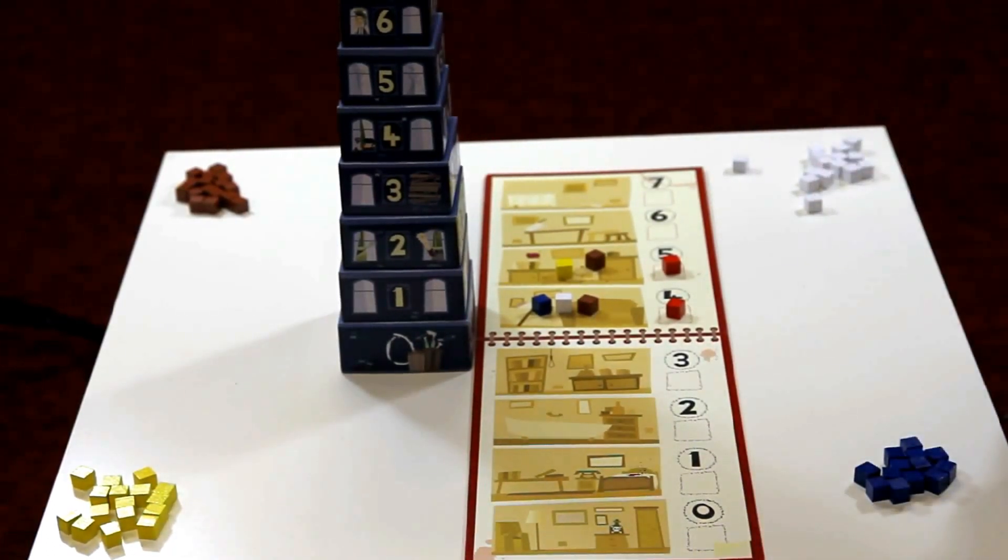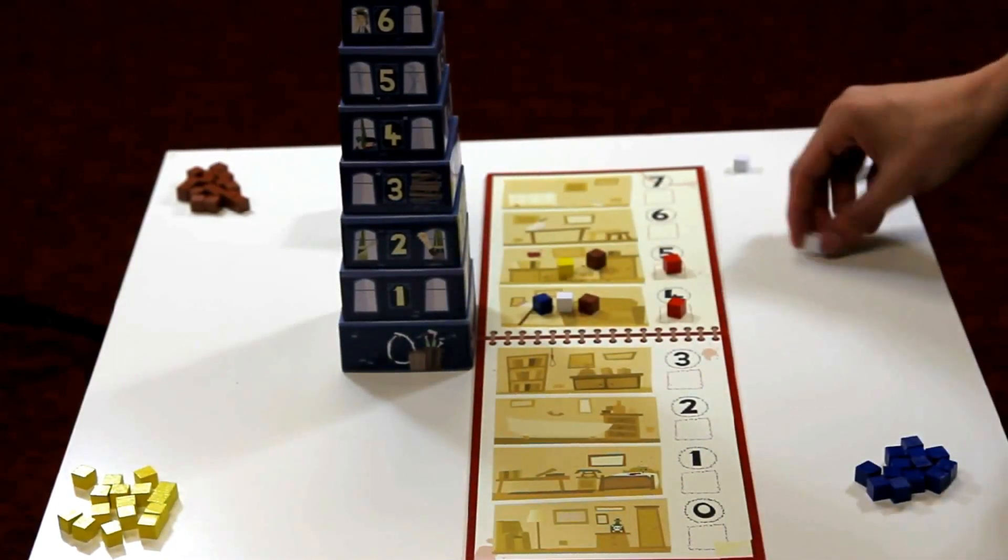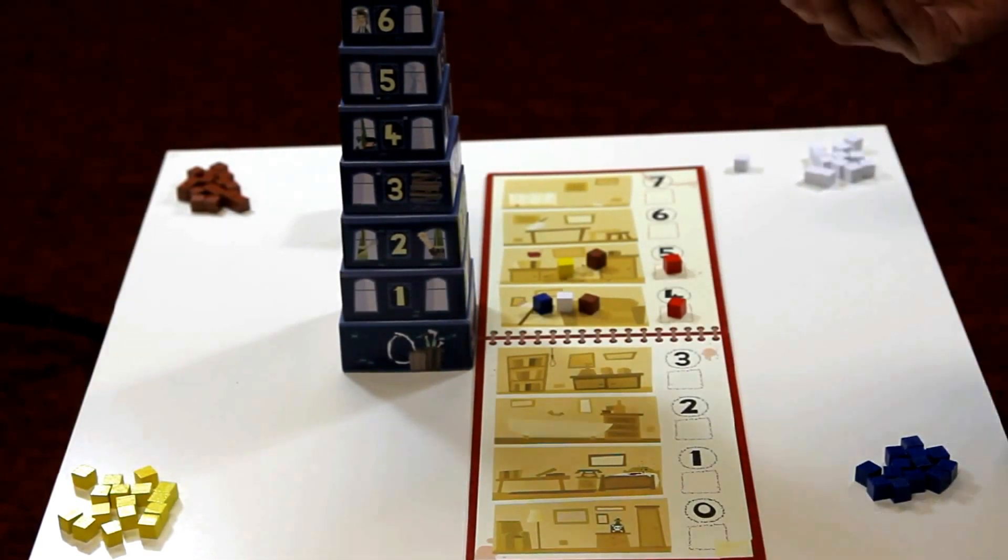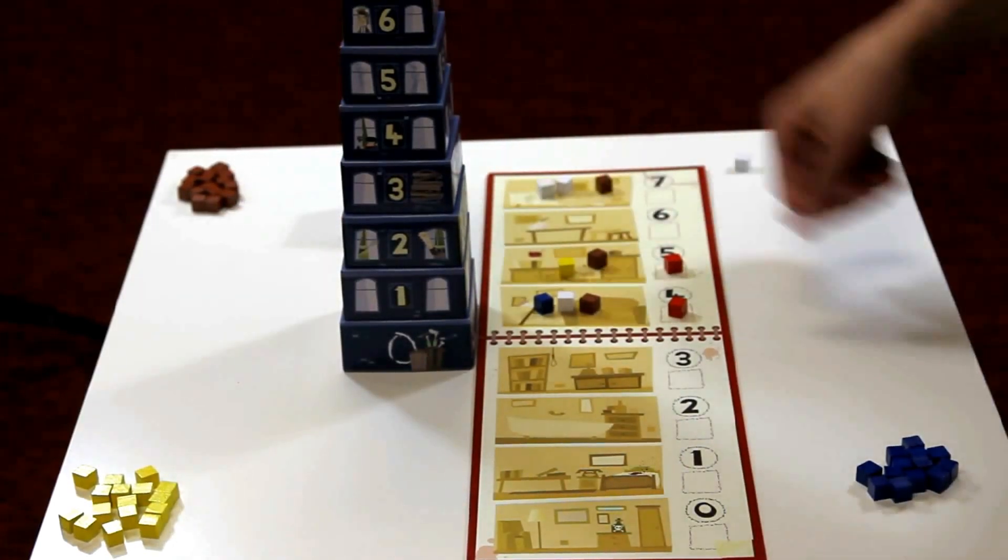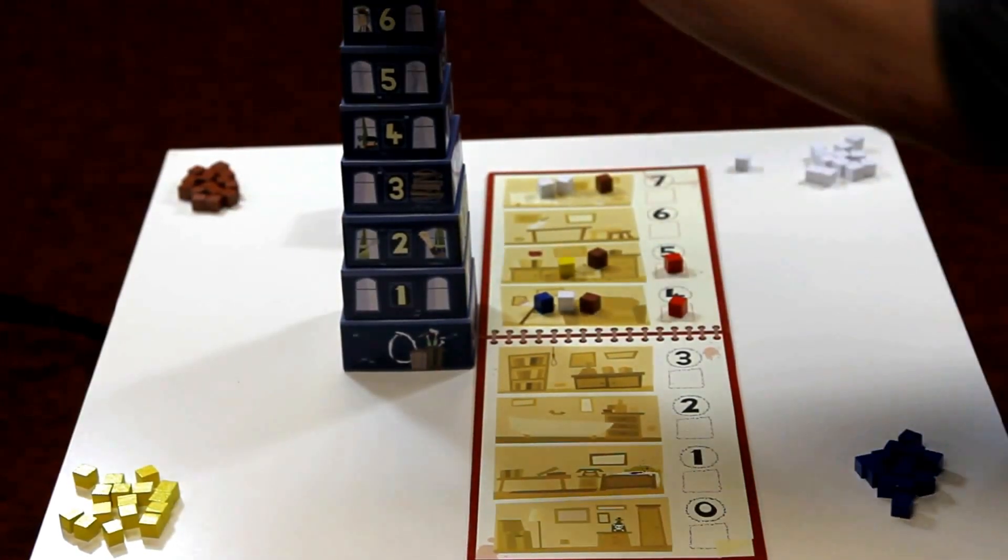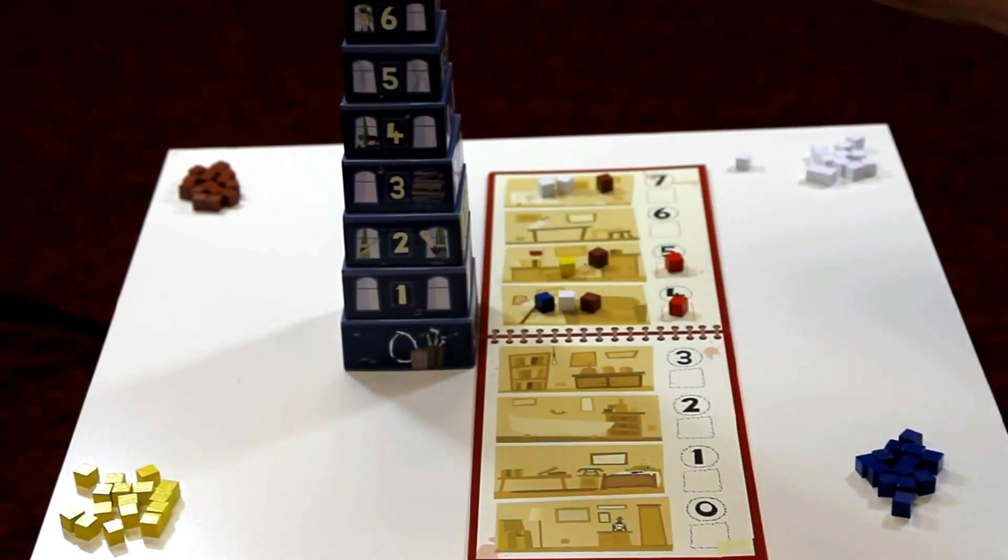The yellow player is going to accuse the white and the brown player of being on the seventh floor. The white player has two cubes on the seventh floor, so we must add two cubes to the investigation sheet, and for the brown player as one. The cubes are now collected and re-seeded back into the tower.